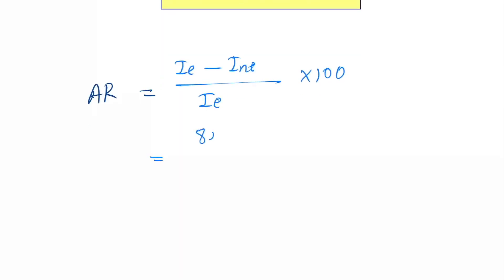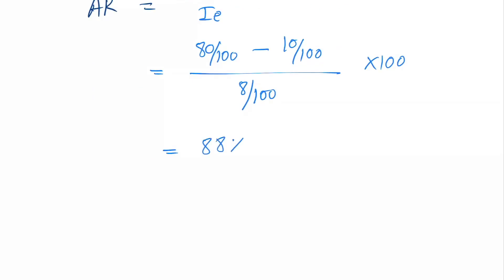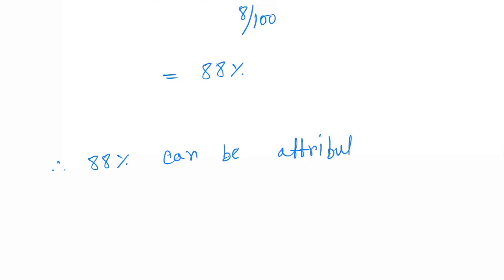Next is attributable risk. The formula is AR equals (incidence of exposed minus incidence of non-exposed) divided by incidence of exposed times 100. According to our example, that's (80/100 - 10/100) divided by 80/100 times 100. The answer will be 88 percent. Interpretation: 88 percent can be attributed to smoking.